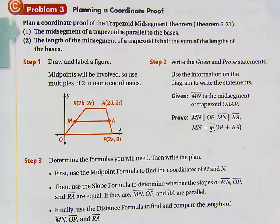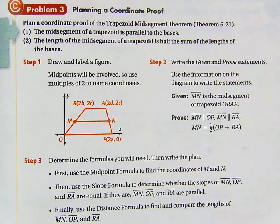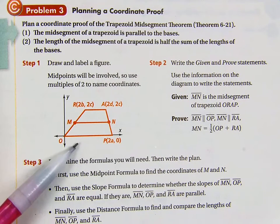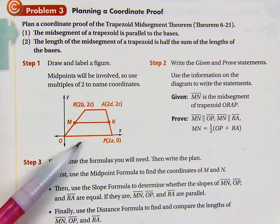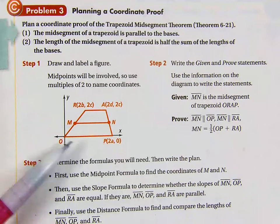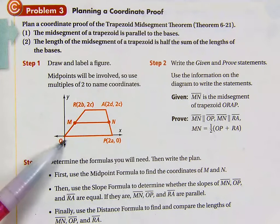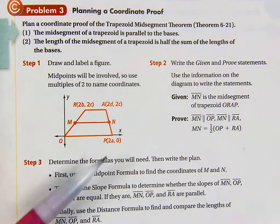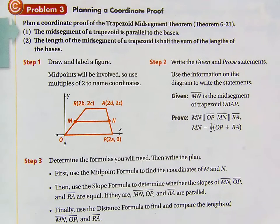In a plan for the proof, the first thing you do — step one — is to draw and label a figure. This one's already done for us, so we know we need a trapezoid in the coordinate plane. They drew their trapezoid with one side on an axis. A good way of doing this is to put one side of the figure on an axis and put a point at the origin.